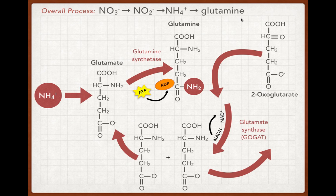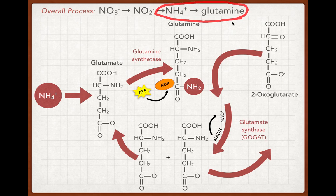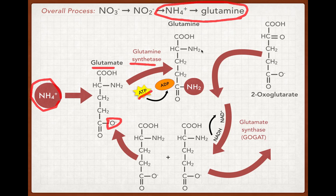Here's the final step, where we go from ammonium to glutamine. This can happen through a number of metabolic pathways; this one is called the GOGAT cycle. First, the ammonium molecule joins with a glutamate molecule, and through catalysis with glutamine synthetase and energy from ATP, the nitrate molecule replaces this oxygen as an amino group, producing a glutamine molecule with two amino groups.